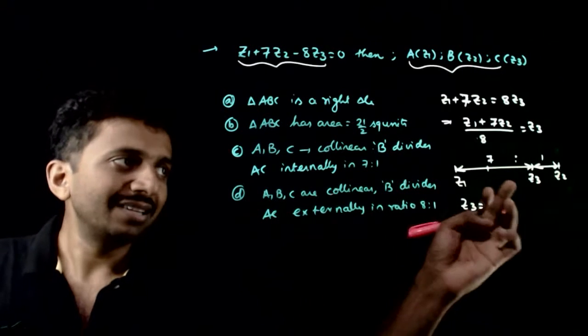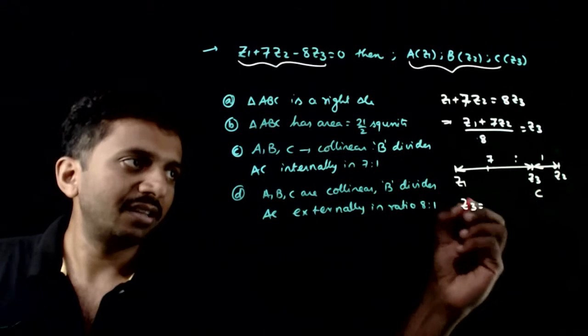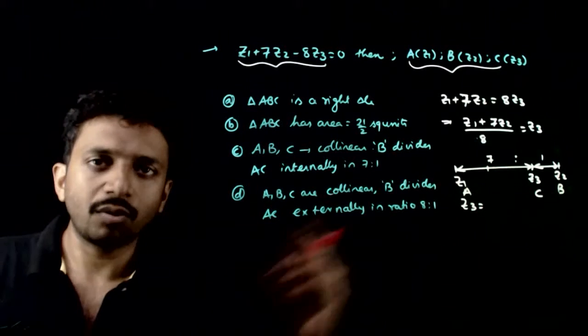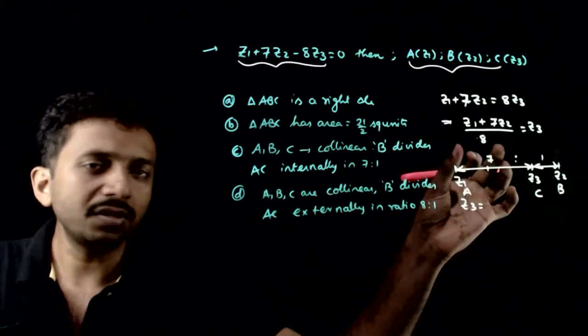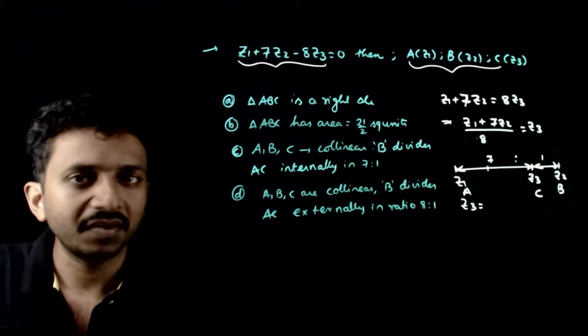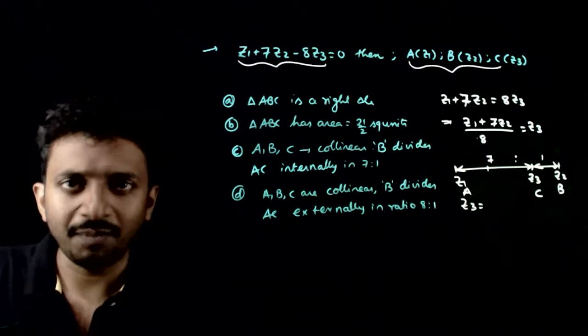So what is the conclusion? Z3, that is point C, divides AB in the ratio 7 to 1 internally. So ABC are collinear, obviously. If that is the option that you have, you can directly mark.